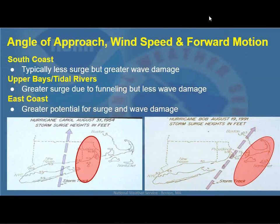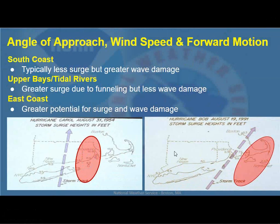Looking at two notable storms — Hurricane Carol on the left, Hurricane Bob on the right — for our south coast it's typically less surge but greater wave damage because those waves can just roll right in, especially in those upper bays and tidal rivers because of funneling. It's Narragansett Bay, the rivers that feed into it, and Buzzards Bay. Carol tracked across eastern Long Island and central Connecticut; the greatest surge was focused across Rhode Island and eastern Connecticut including Narragansett Bay. For Hurricane Bob, the track was from Block Island across southeast Massachusetts; maximum surge was in a small area across Cape Cod and the islands to the right of track.